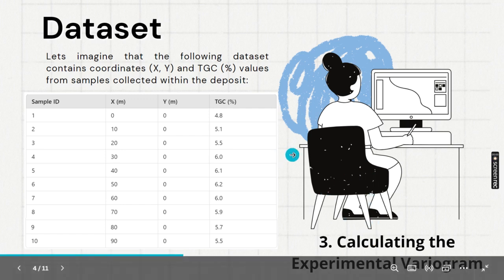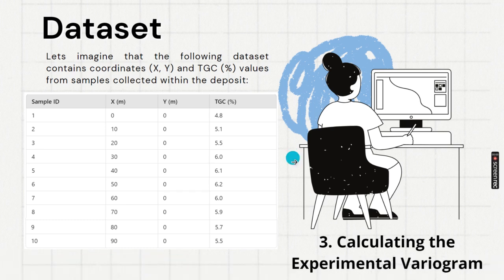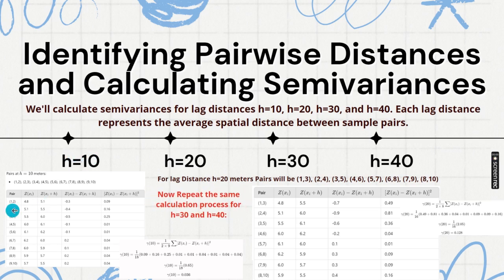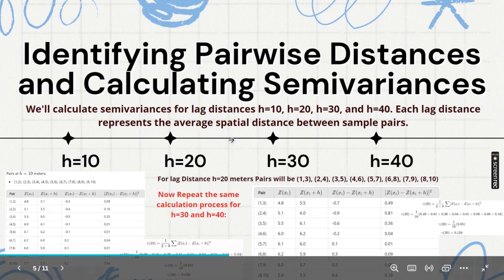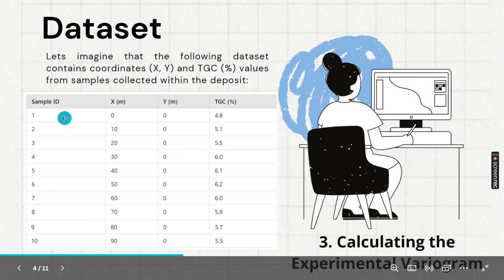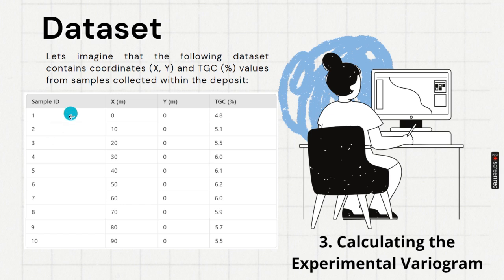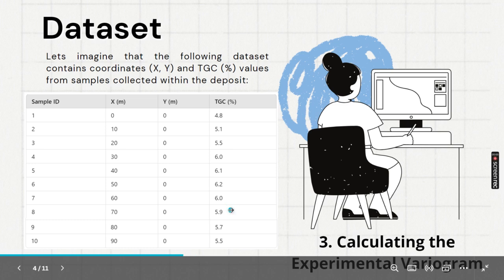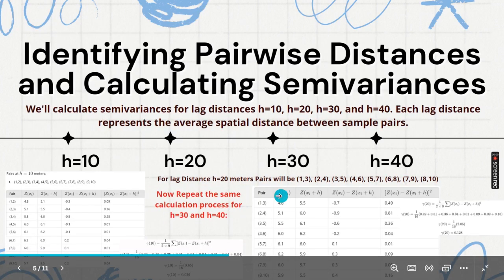Calculating experimental variogram. Now you have understood about lag spacing. Now let us see, when h equal to 10, lag spacing equal to 10. How many pairs will be possible to construct based on this data? See this data: 1, 2, total 10 data is there, 10 boreholes. If we consider lag spacing of 10, how many? 9. 9 pairs will be possible. When lag spacing will be 20, how many pairs will be possible? If you see here, 1, 3, 2, 4, 3, 5, like that: 8.